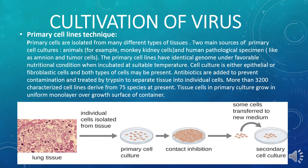In laboratories, more than 3200 primary cell lines are being characterized, derived from different species — about 75 species at present. In this picture, a primary cell has been isolated from tissue in a petri plate, forming a uniform monolayer as a primary cell line. When we carry out inoculation of virus into it...